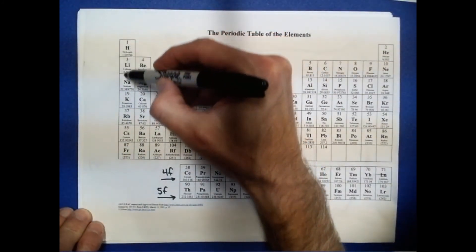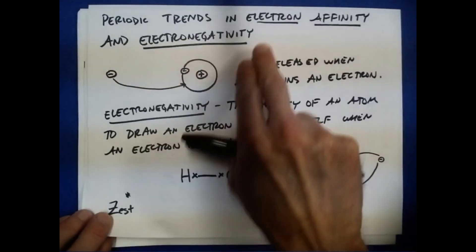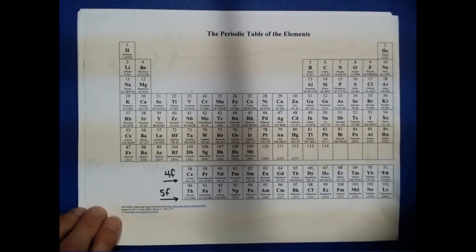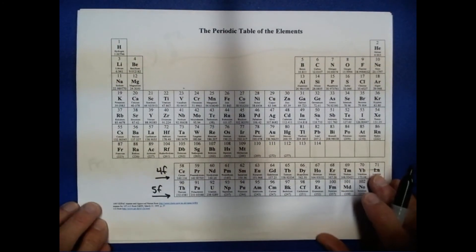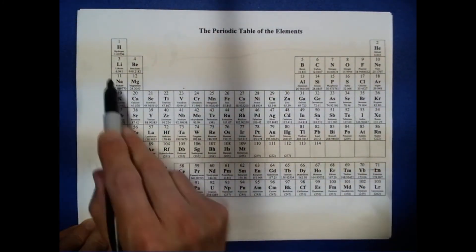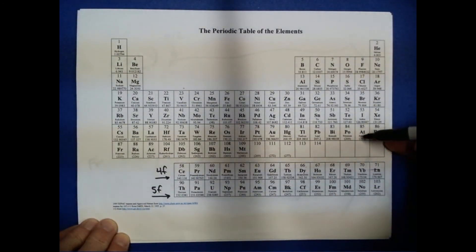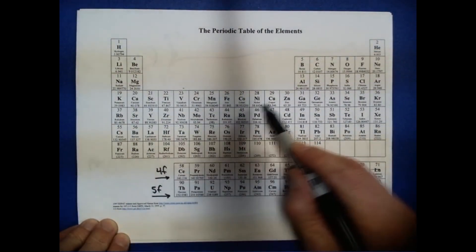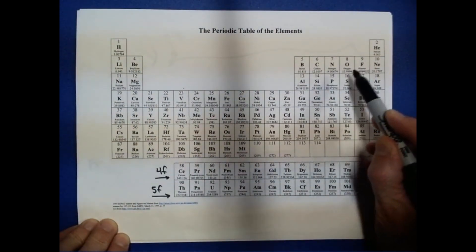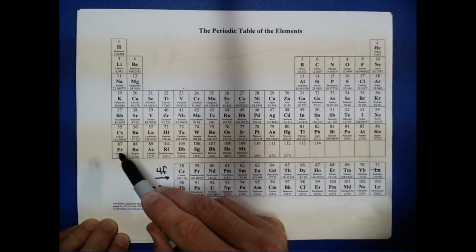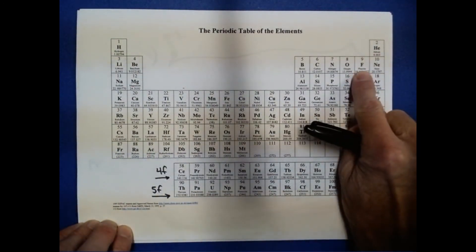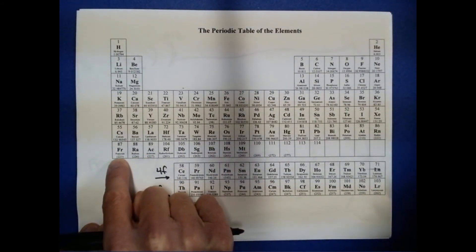This tells us that as we move down a group, electron affinity is going to decrease. And when these atoms are in bonds, electronegativity — which tracks electron affinity — also drops as you move down a group. So for both electron affinity and electronegativity: moving across a period, they increase; moving down a group, they decrease. Moving toward the upper right of the periodic table increases electronegativity, and fluorine is the element with the highest electronegativity, while francium has the smallest electronegativity.